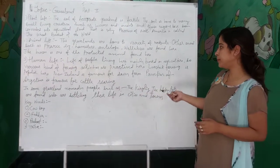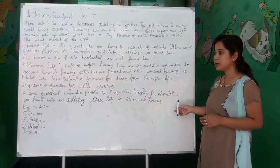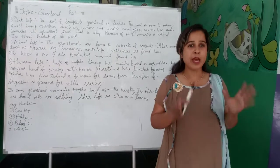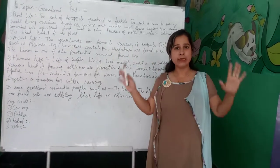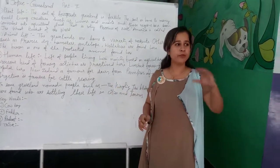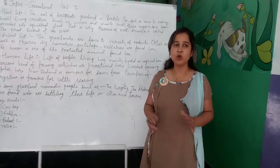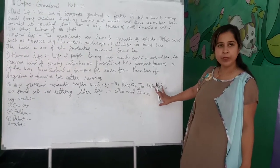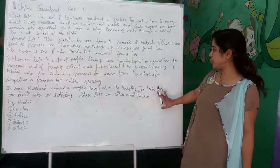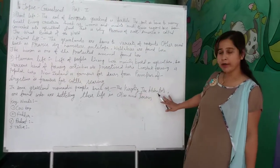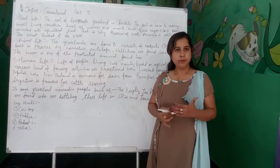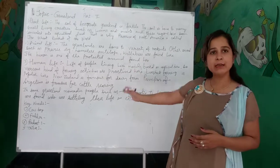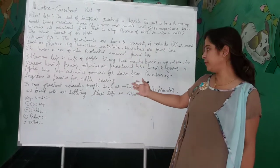In some grasslands, nomadic people such as the Kirghese and the Hottentots are found. Tribal people are those nomadic people who don't have their own settled home — they move from one place to another in search of food and shelter and have no permanent settlement. However, as time has passed and new technologies have developed, these people have settled their lives in different cities and towns.